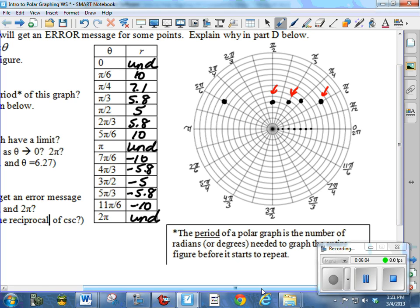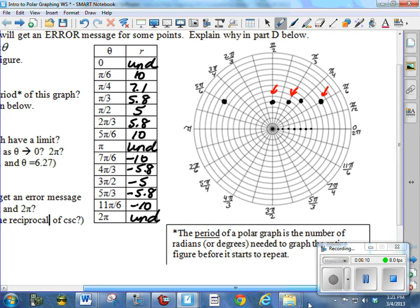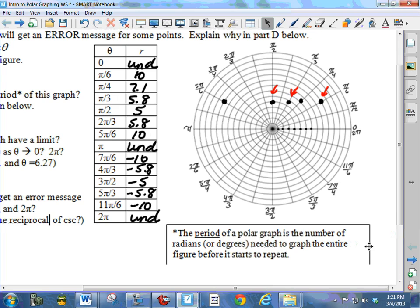And if we kept going, let's look at some of these other questions. What is the period of this graph? See the definition below. The period is the number of radians or degrees needed to graph the entire figure before it starts to repeat. Well, notice it started to repeat as soon as we started to hit those negative numbers. So it looks like the period is pi. It looks like we go from 0 to pi. And at pi, it starts to repeat again. So we would say the period is pi here.